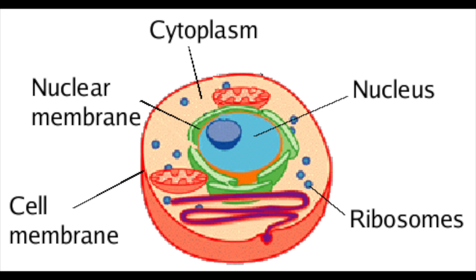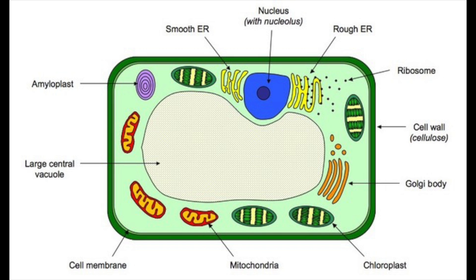Now we'll look at plant cells. Most of the components are the same as in the animal cell, but there are three big differences.